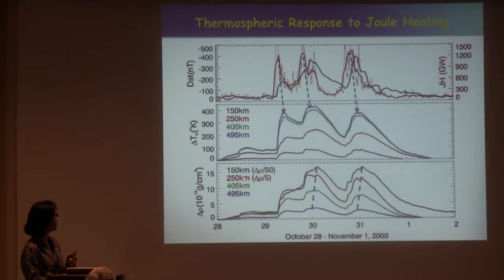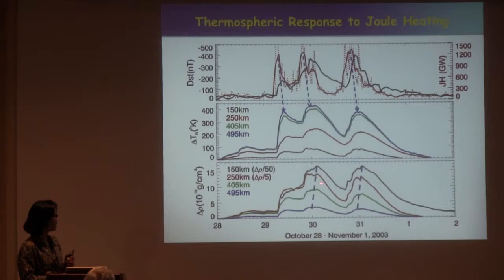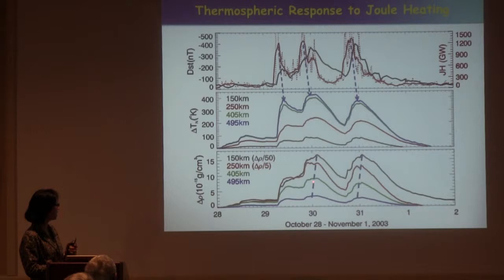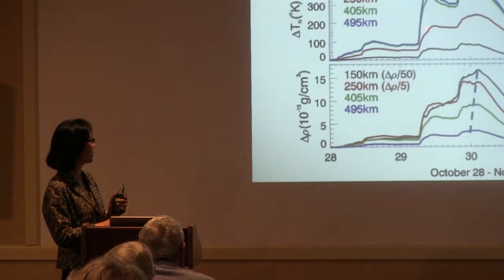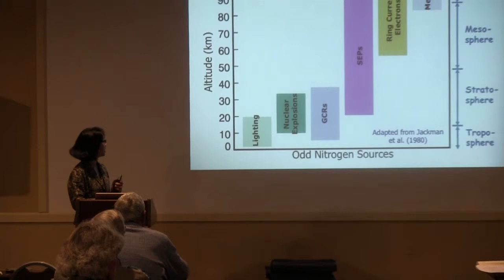The bottom panel shows mass density at different heights. One interesting thing we're still trying to figure out is that the peak of the density has an altitude dependence in terms of response — quicker at high latitude and slower at low latitude. However, such altitude dependence is not very obvious in the temperature.